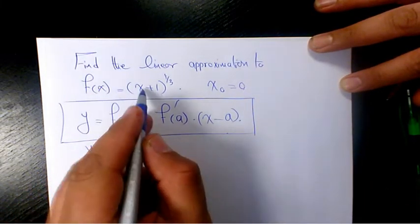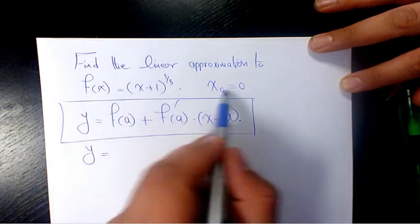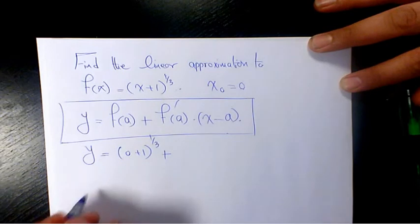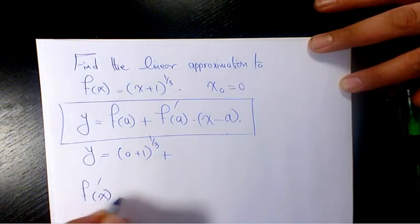f(a) is going to be the value of this function at this point, which is (0+1)^(1/3). f'(x) is going to be 1/3(x+1)^(1/3-1), which equals 1/3(x+1)^(-2/3).